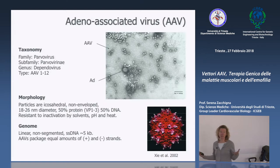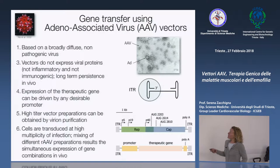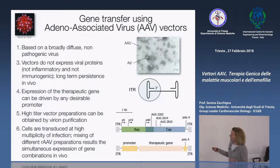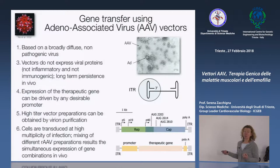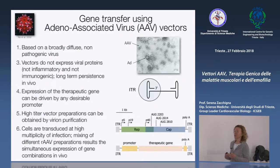I geni più grandi del genoma umano sono troppo grandi per essere impacchettati nella maggior parte degli AAV. Il genoma wild type di AAV è molto semplice: fatto solamente da due geni — REP, che codifica per proteine che servono alla replicazione del virus, e CAP, che codifica per proteine che formano il capside.